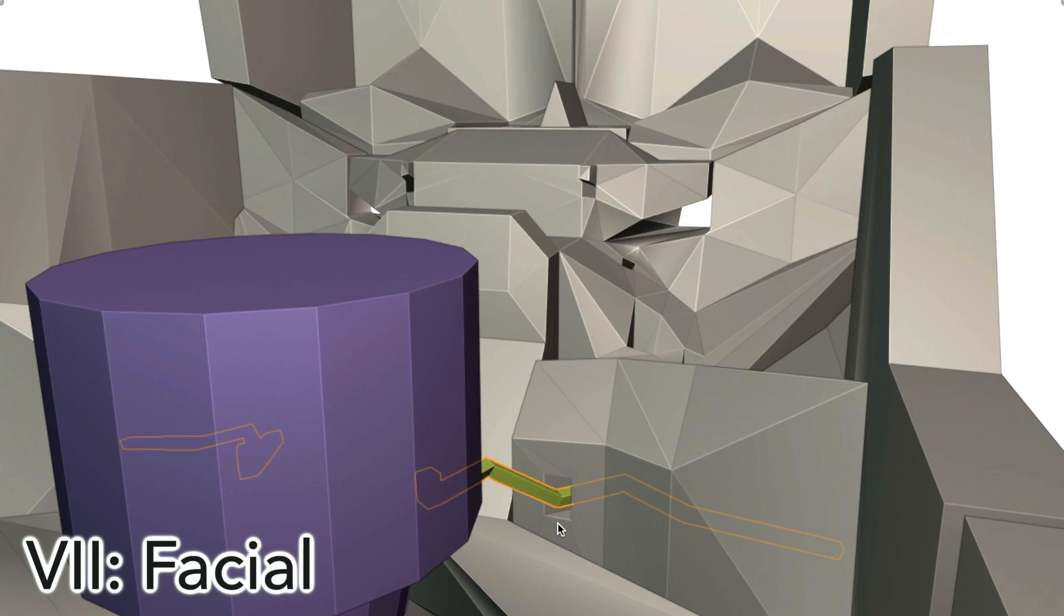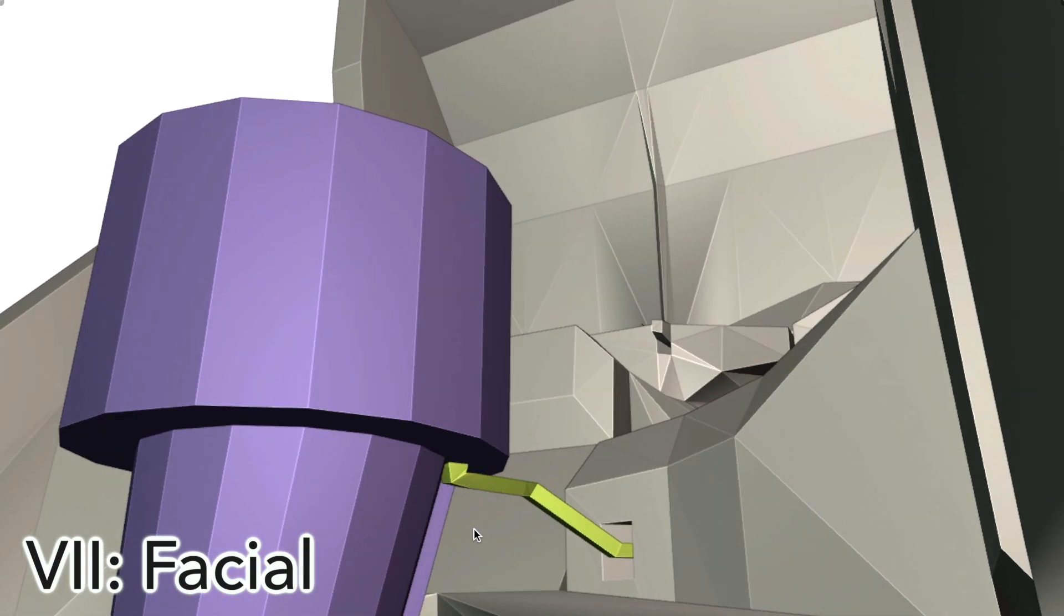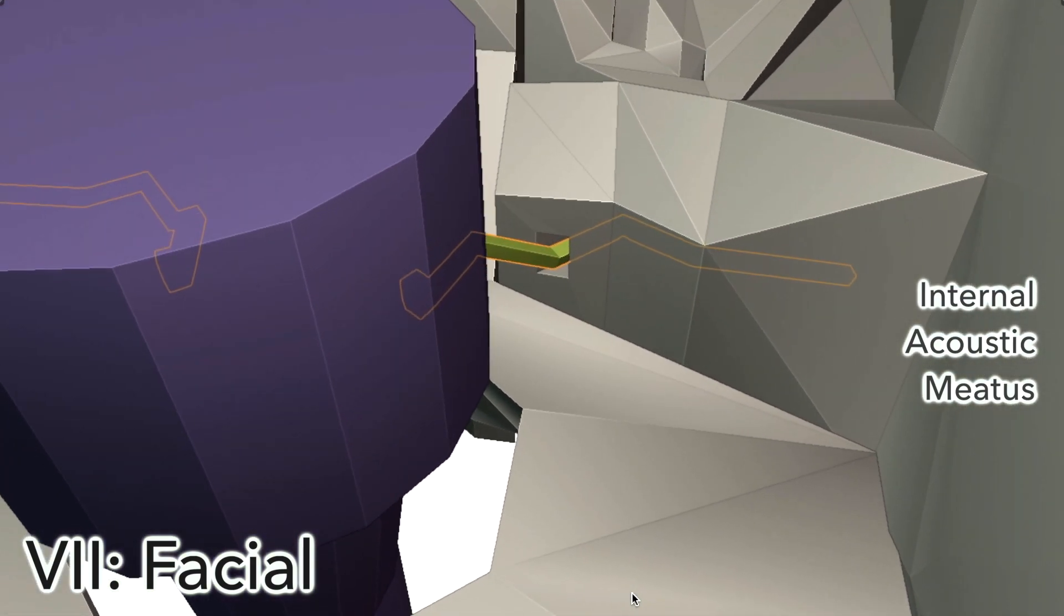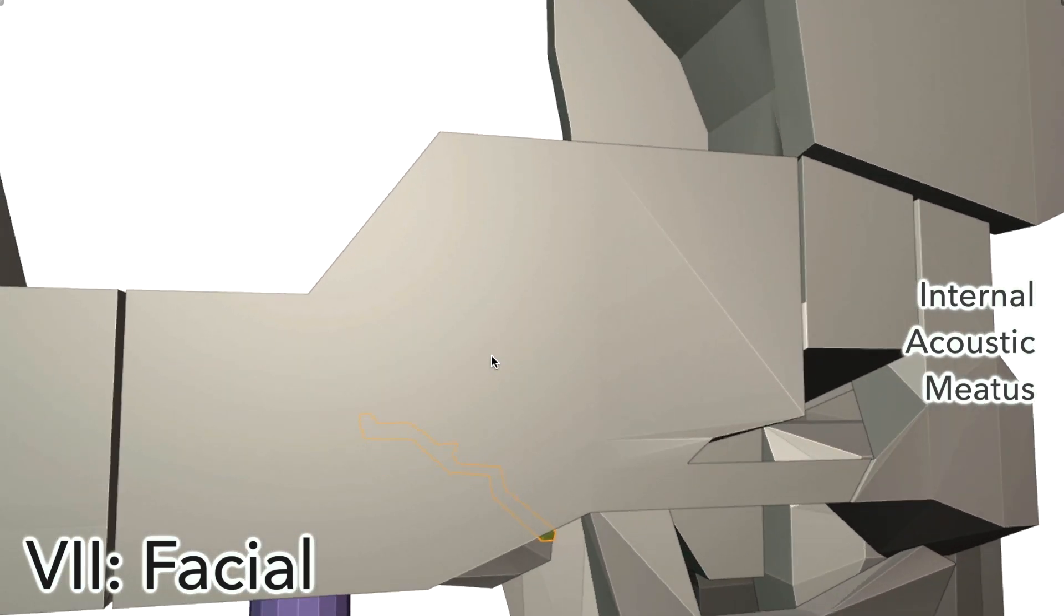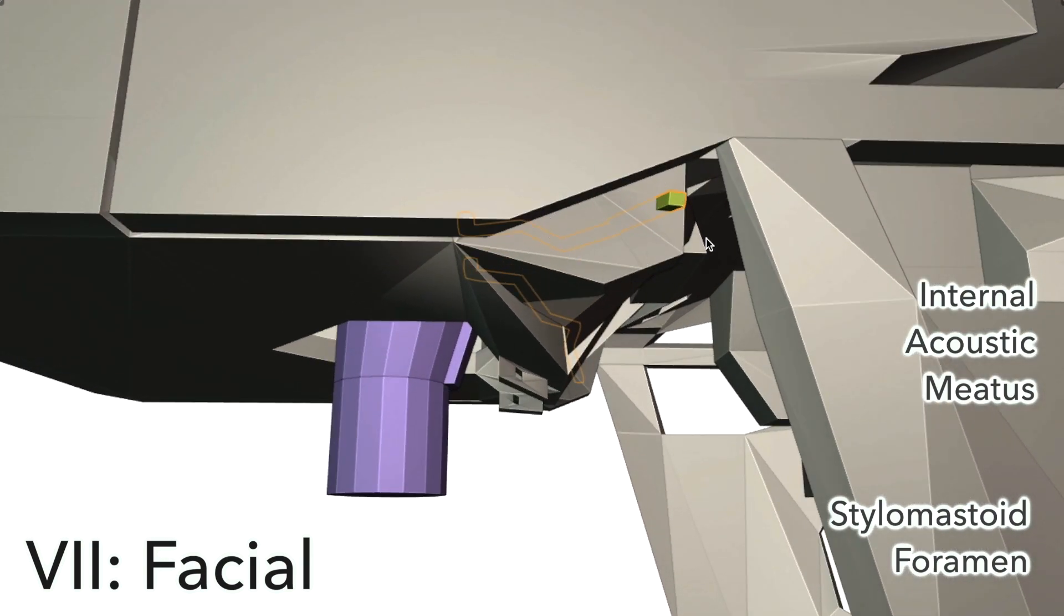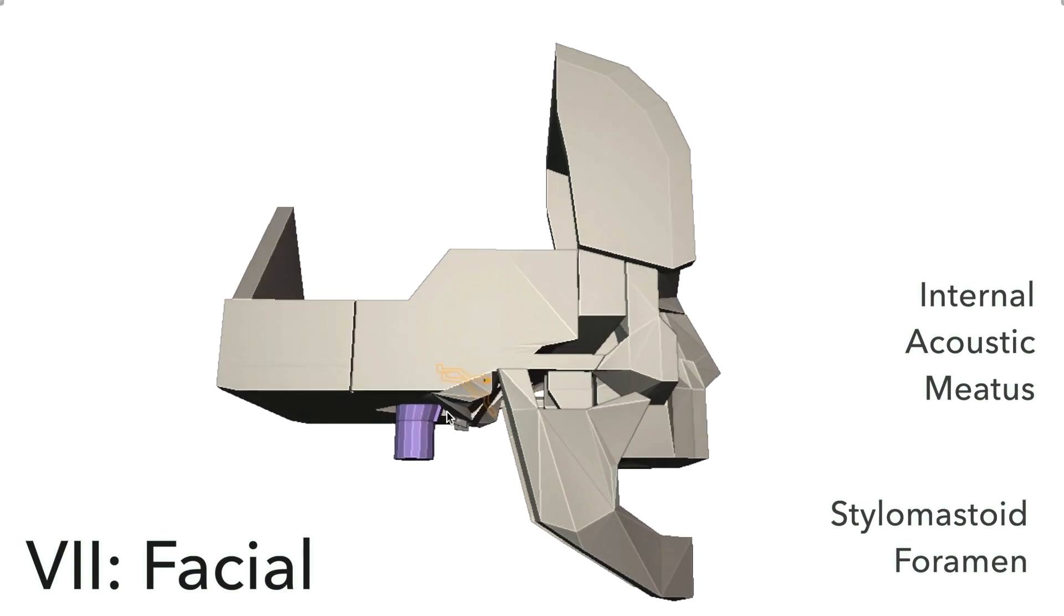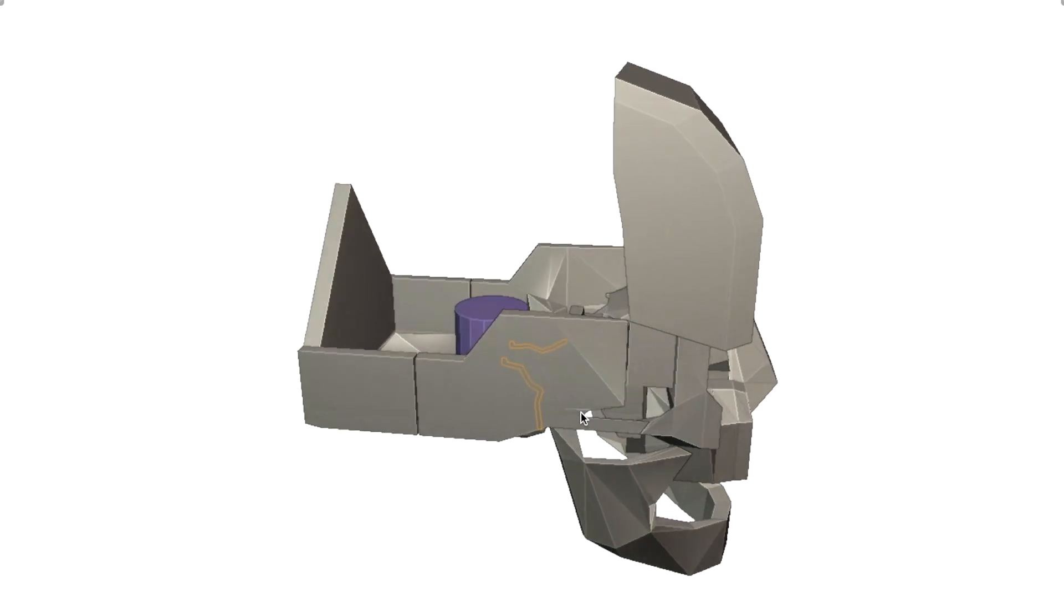Next up, we have the facial nerve, which follows quite an interesting path. It originates from this area called the cerebellopontine angle, which is basically just the junction between the medulla and the pons. Its first port of call is to head through the internal acoustic meatus. It then navigates its way through the temporal bone, which is this bone here, and comes out through the stylomastoid foramen. This is the mastoid process of the temporal bone here. And here's the facial nerve exiting through the stylomastoid foramen. From there, it heads toward the muscles of facial expression, as well as to several glands of the head. So it has a real number of different functions outside the scope of this video.